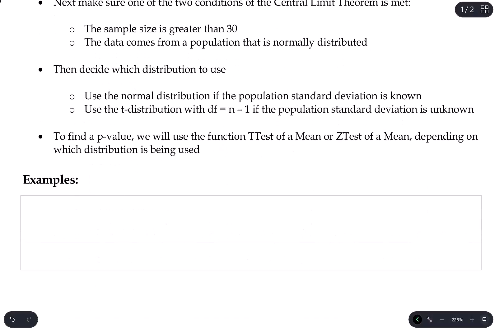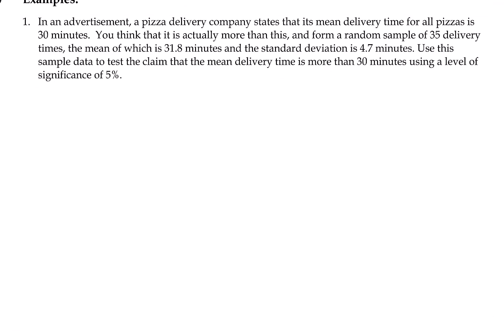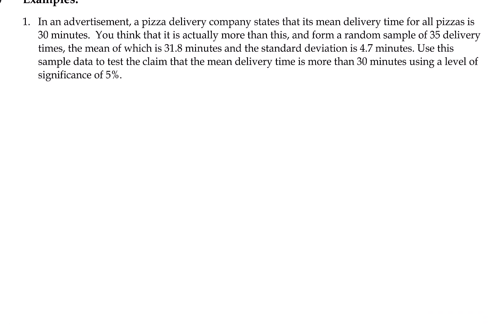Let's take a look at some examples. First, we have an advertisement from a pizza delivery company stating that its mean delivery time for all pizzas is 30 minutes. You think this is actually more than this, and from a random sample of 35 delivery times, the mean is 31.8 minutes and the standard deviation is 4.7 minutes. Use this sample data to test the claim that the mean delivery time is more than 30 minutes using a level of significance of 5%.